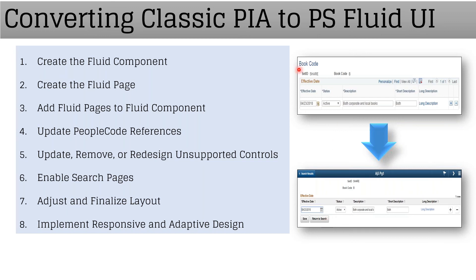For example, here we are converting a very simple Book Code page into a fluid page. For that we need to create a fluid component, then a fluid page, and add that fluid page to the fluid component. We need to change the PeopleCode references in the existing page because we have changed the name of the component and page. Then we need to update, remove, or redesign some unsupported controls — for example, a particular grid in classic mode is not supported in fluid mode, so we need to convert it into a flex grid.